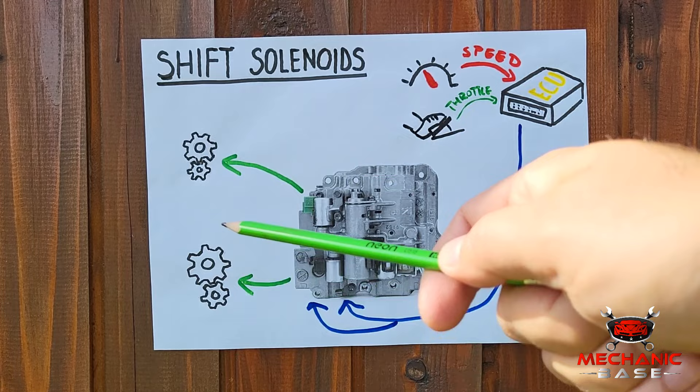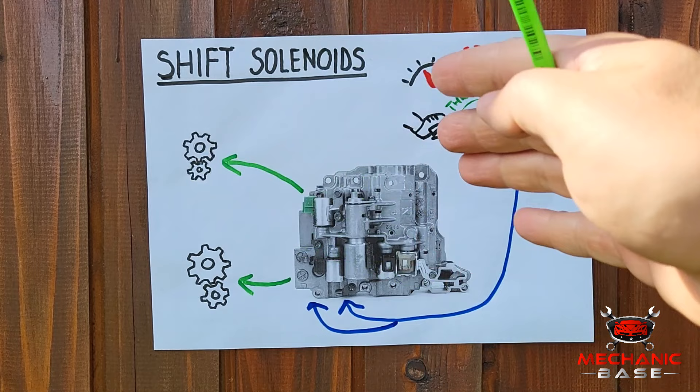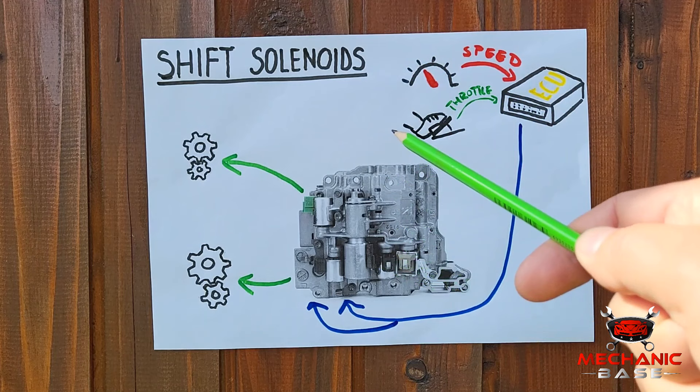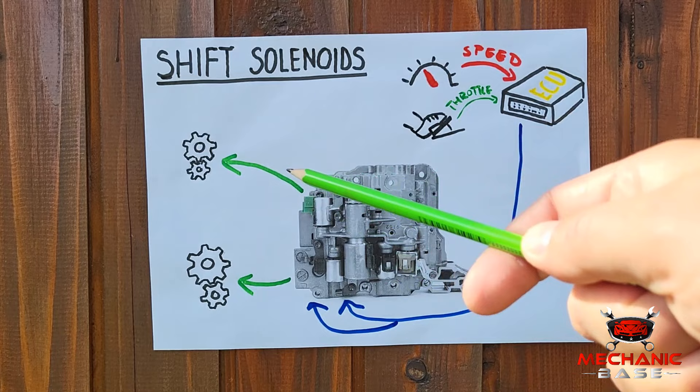There is a lot of complexity in how the shift clutch in the automatic transmission works, but we won't go there now. At this point, you just need to remember that shift solenoids are the ones that convert electrical signals from the ECU into mechanical movement that actually makes the gear changes.